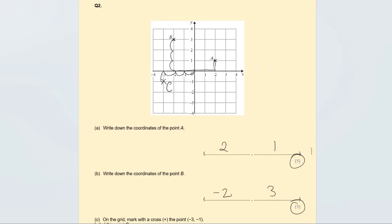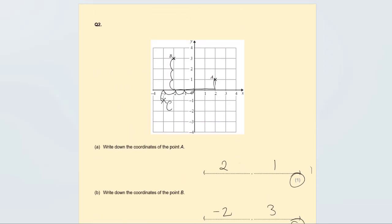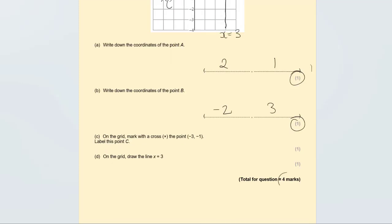Label it as point C. Final question on the grid: draw the line x equals 3. On the x-axis, x equals 3 is here, so draw a straight vertical line through that point. Make sure you use a pencil and ruler. This line is x equals 3. These are worth four marks altogether, one mark each.